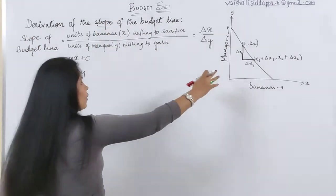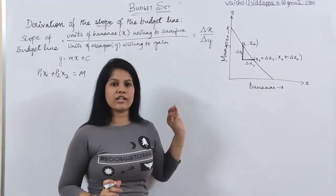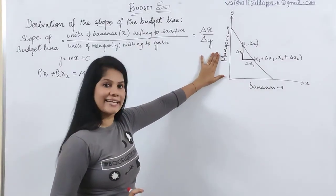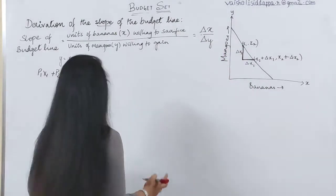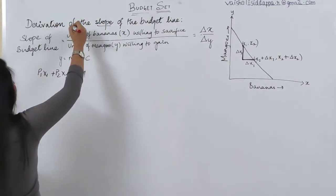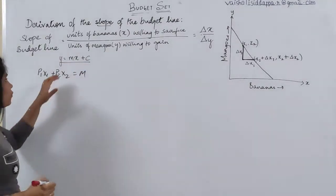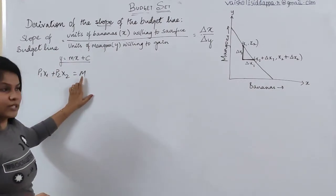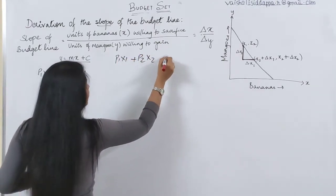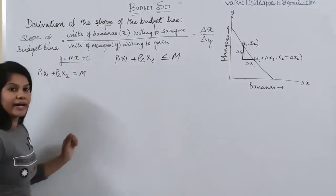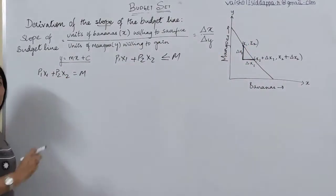We are now done with the slope. The simple reason for this kind of slope is the theory logic: for one good you have to sacrifice another good. For derivation, refer to previous videos on budget set. The budget set equation is p1·x1 + p2·x2 ≤ m, but the exact budget line we take is p1·x1 + p2·x2 = m.